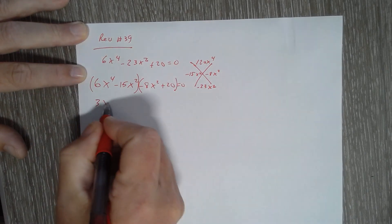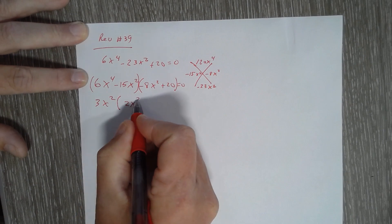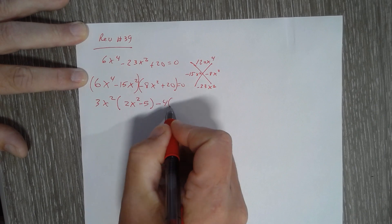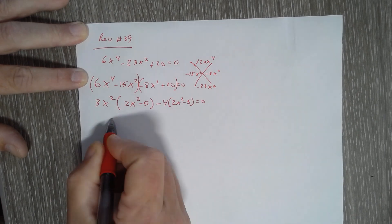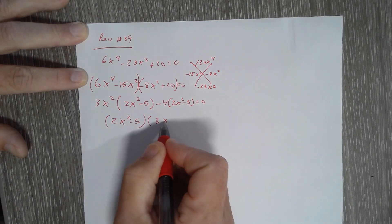I'm going to factor out a 3X squared on the first one, and I'll do a 2X squared minus 5. I'm going to pull out a negative 4 out of the second one, which gives me 2X squared minus 5. The 2X squared is grouped together and I get 3X squared minus 4.